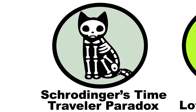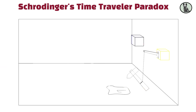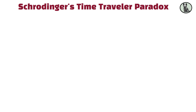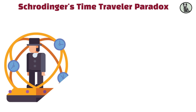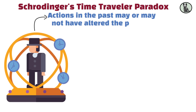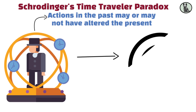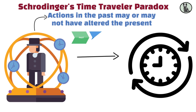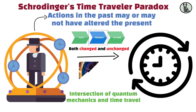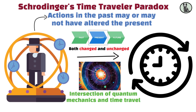Inspired by the famous Schrödinger's Cat thought experiment, this paradox considers a scenario where a time traveler's actions in the past may or may not have altered the present. Until the time traveler returns to their original time, the present exists in a superposition of states, both changed and unchanged. This paradox explores the intersection of quantum mechanics and time travel.